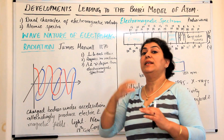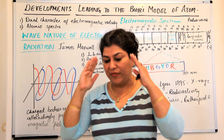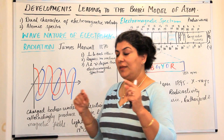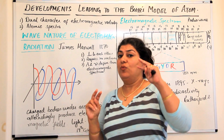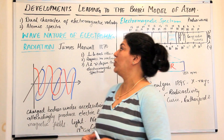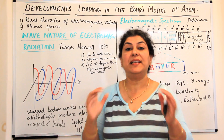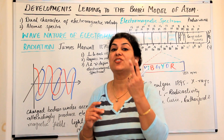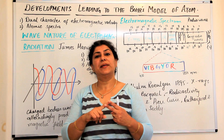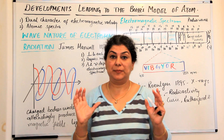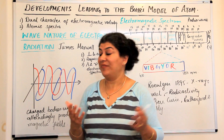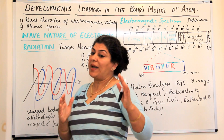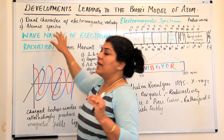Niels Bohr, who proposed the next model of an atom, was constantly keeping himself aware of events happening in the scientific world, and these were creating impressions that would lead to his model. There were two new findings that really led Bohr to devise his model: one was the dual character of electromagnetic radiation — meaning electromagnetic radiations are both wave-like and particle-like — and the other was atomic spectra.